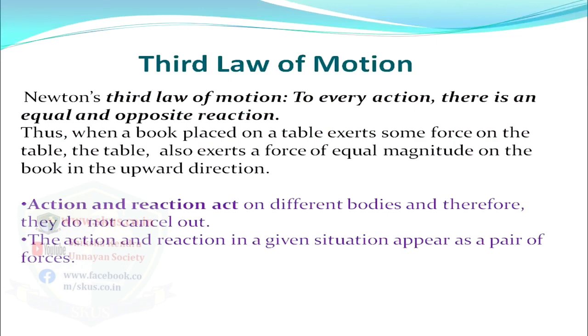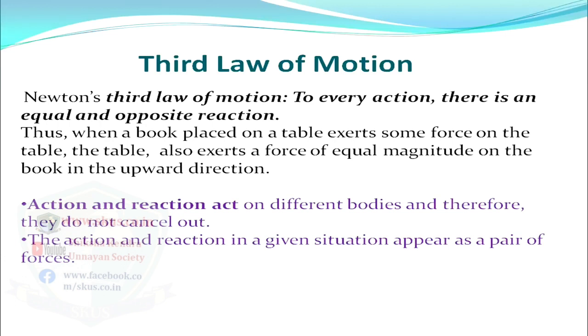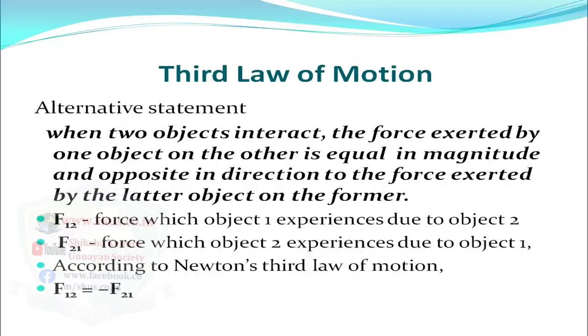From this we can state Newton's third law of motion: to every action there is an equal and opposite reaction. When a book placed on a table exerts force on the table, the table also exerts a force of equal magnitude on the book in the upward direction. Action and reaction act on different bodies and therefore do not cancel out. Alternatively, when two objects interact, the force exerted by object 1 on object 2 is equal in magnitude and opposite in direction to the force exerted by object 2 on object 1: F₁₂ = −F₂₁.